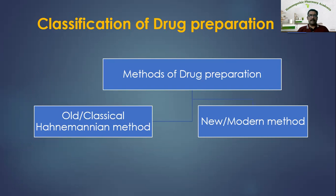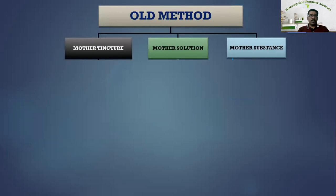In the old or classical Hahnemannian method, there are three forms of drugs: mother tincture, mother solution, and mother substance. One basic difference between the old and new methods is that in the old method, Hahnemann considered the moisture or water present in the plant as part of the drug, whereas in the new method it is considered part of the solvent or vehicle, and drug strength is calculated accordingly.